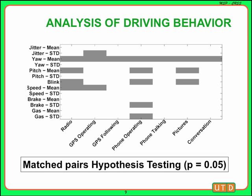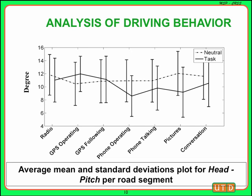This graph shows the significant features for each task. For example, the feature yaw mean is significantly different between normal and task driving for all seven tasks. Here, as an example, we plot the average and standard deviations of the head pitch feature across all subjects for each of the seven tasks. While tasks such as phone operating and picture description show a huge difference, other tasks such as radio or GPS following do not show significant difference between features from normal and task driving.